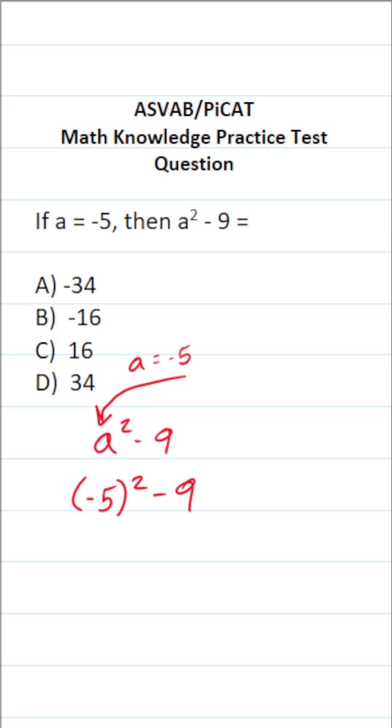What is negative 5 squared? That's the same thing as negative 5 times negative 5 minus 9. Negative 5 times negative 5. A negative times a negative is going to be a positive. More specifically, negative 5 times negative 5 is going to be positive 25.